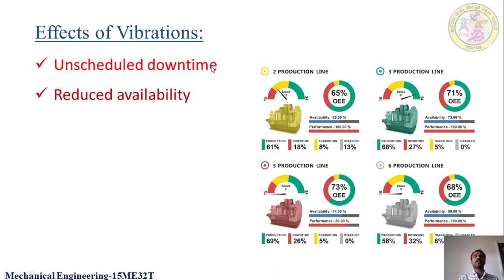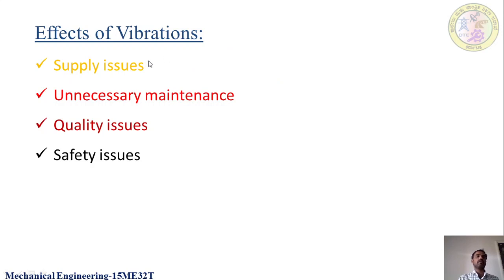A few more effects of vibration are unscheduled downtime and reduced availability. If a machine in a production line breaks down unexpectedly - which was not planned - it leads to production failure. Similarly, reduced availability of the machine tool occurs. If there is a downtime or breakdown of the machine due to vibration, the availability of the machine will be reduced, as shown in the graphs here.